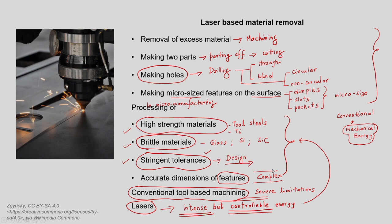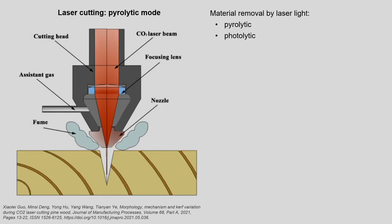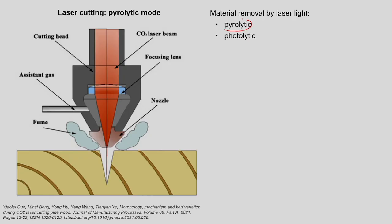With this, lasers are finding huge and wide applications in material removal. Now let us see how laser cutting is carried out. There are basically two ways in which laser cutting is carried out. The first method is called the pyrolytic process or pyrolytic method, and the second one is called the photolytic method. Let us see what is the meaning of these two methods in the context of laser cutting.